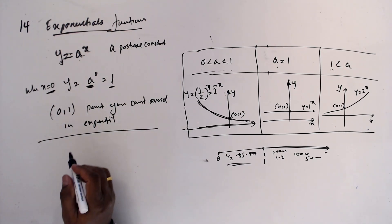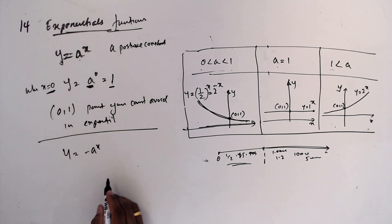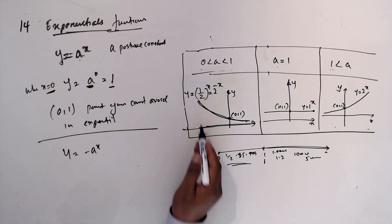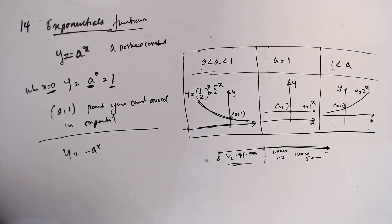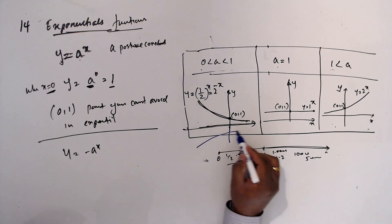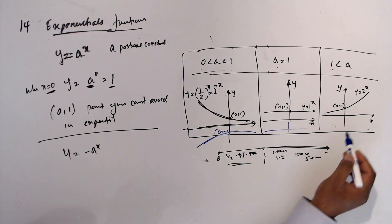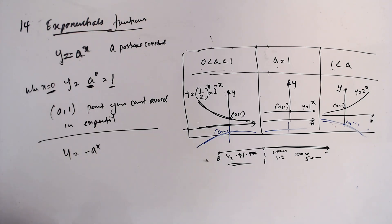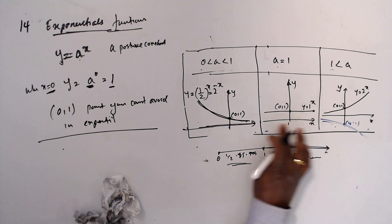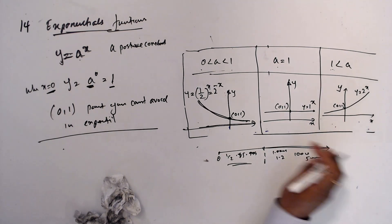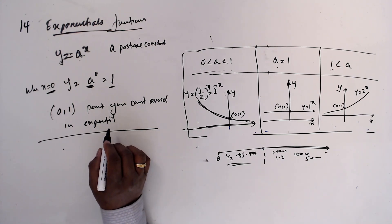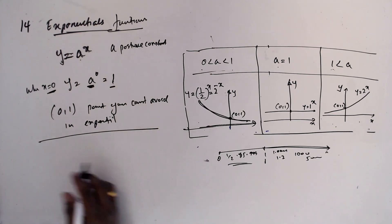The only exception would be y = −a^x, which reflects the graph, making it pass through (0, −1) instead. This is also an exponential form but we won't focus on it — it's just for your knowledge.